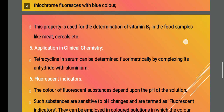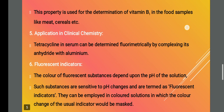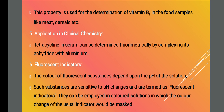The next application is clinical chemistry. Tetracycline in serum can be determined by fluorometry because of its complex formation with aluminium. Serum is essentially blood, so tetracycline in blood can be determined using this fluorometric technique.